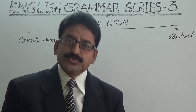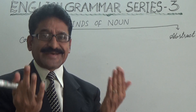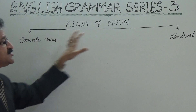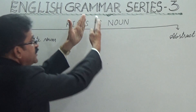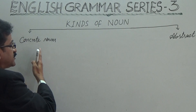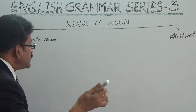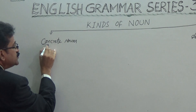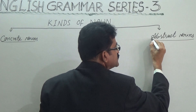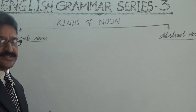Names are divided into two kinds depending upon their characteristics: concrete nouns and abstract nouns. What are these concrete nouns and what are these abstract nouns — that is what we are supposed to discuss.